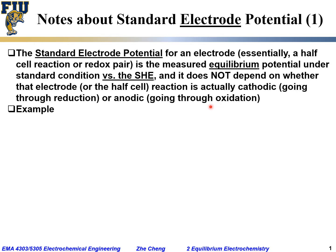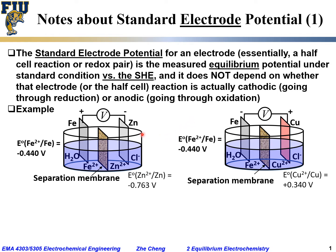Let's use examples to illustrate what we mean. We are looking at two examples. On the left, we have iron and zinc metal inserted in solutions. The standard electrode potential for iron is minus 0.440 V, while the standard electrode potential for the zinc 2+ / zinc redox pair is minus 0.763 V.